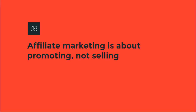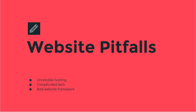People don't like to get sold, but they love to buy. Promoting something through your own personal lens is the bread and butter of affiliate marketing. The most common website pitfall is setting up your site to sell rather than promote. The next three most common pitfalls are unreliable hosting, overly complicated technology, and poor website organization — where people simply can't navigate easily. You absolutely need to set up a reliable website, and I'll show you how at the end of this video.